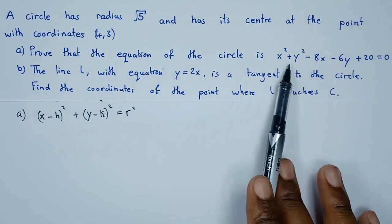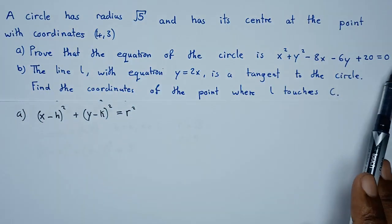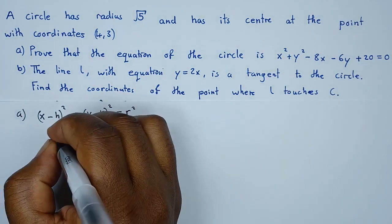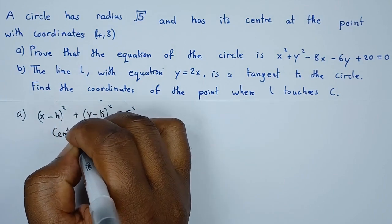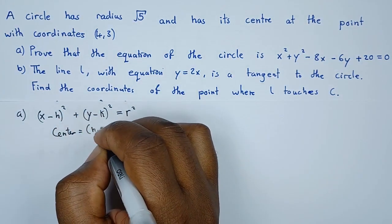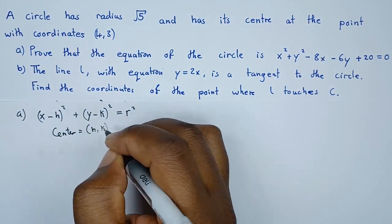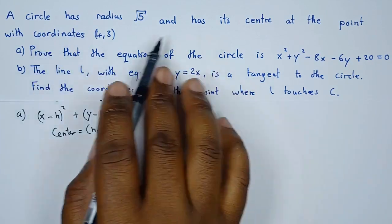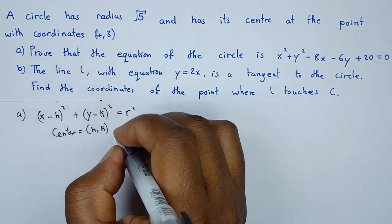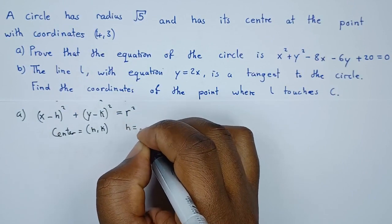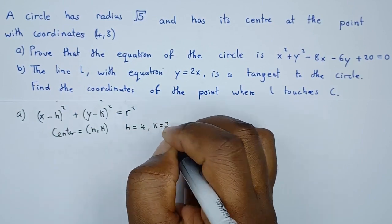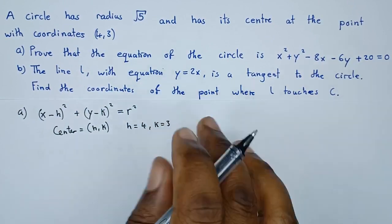Our first question says prove that the equation of the circle is given by this expression. The center is given by h comma k, which in this case is 4 comma 3. So the value of h is 4 and the value of k is 3.